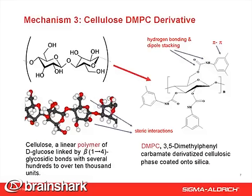Mechanism 3: Cellulose DMP. Cellulose is the linear polymer of D-glucose linked by beta-1,4-glycosidic bonds with several hundreds to over 10,000 units. Unlike cyclodextrin, cellulose needs to be derivatized to work well in chiral HPLC. After derivatization, carbamate groups provide strong hydrogen bonds and dipole stacking, and phenol groups provide pi-pi interaction. Most polymer backbones have grooves and pockets in between glucose units that can provide steric interactions.